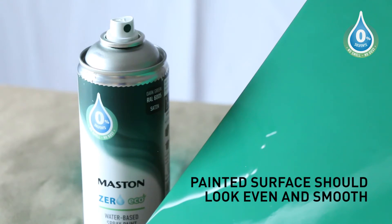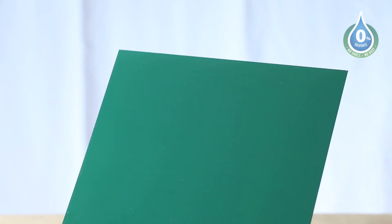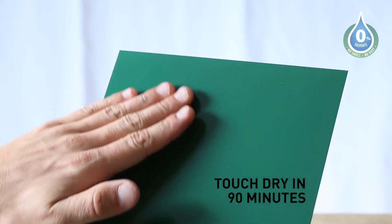The painted surface should look smooth and even and will be touch dry in about 90 minutes depending on the drying conditions.